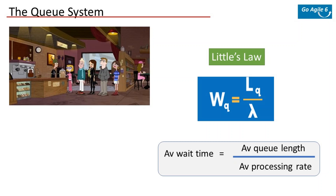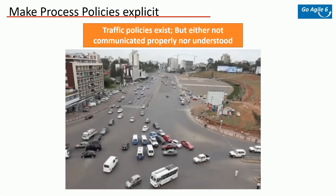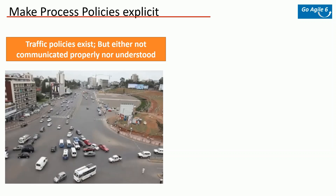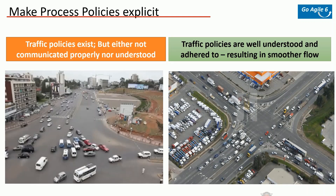The next principle is making process policies explicit. There could be policies established, but unless you explicitly communicate them, they are not of much use. For example, traffic policies exist but when not communicated properly or understood, it can lead to chaos and even accidents — as you can see in the picture. When the same policies are explicitly communicated and understood, the flow gets smoother, just as with traffic cops or traffic lights, shown on the right side.